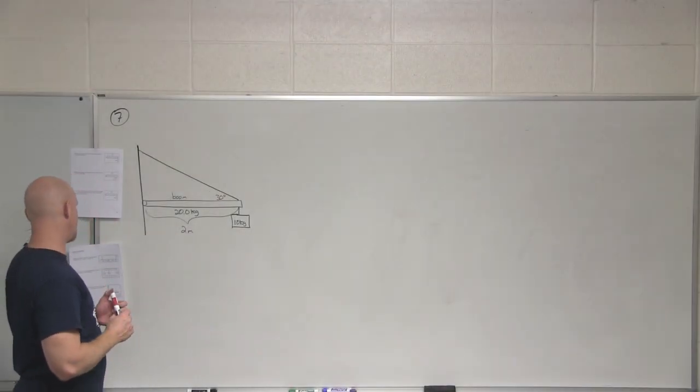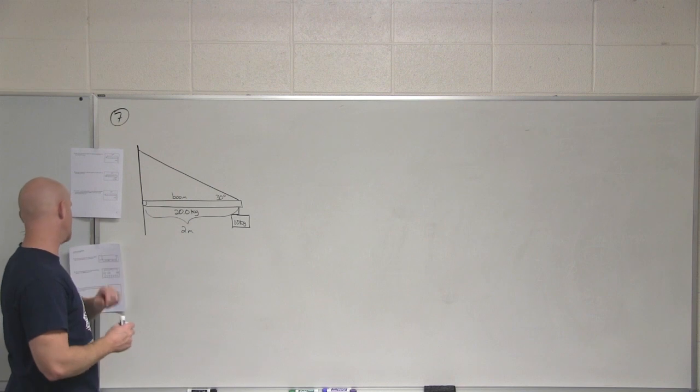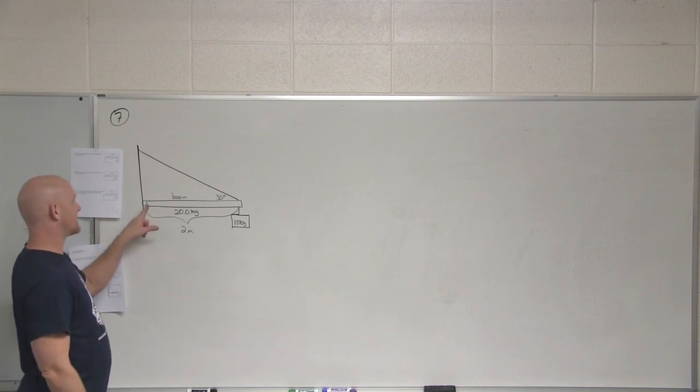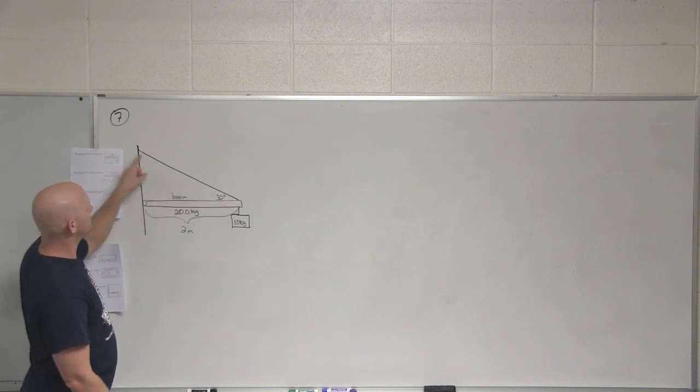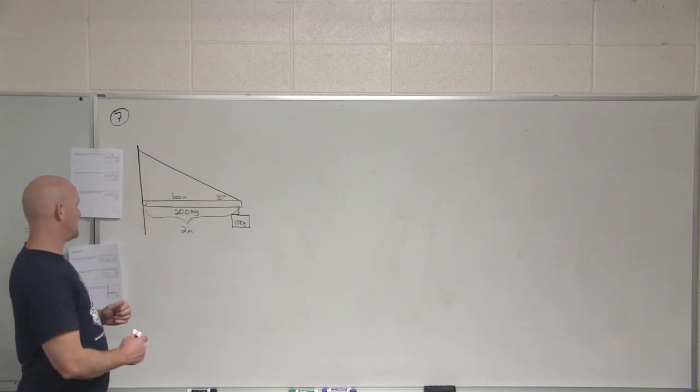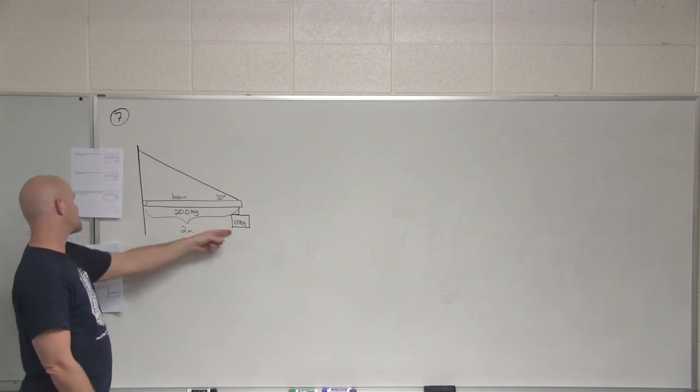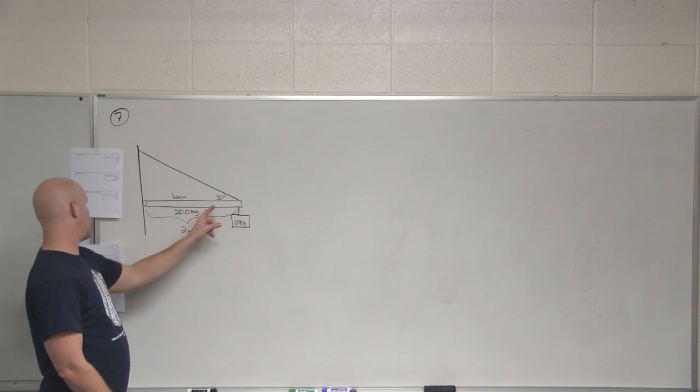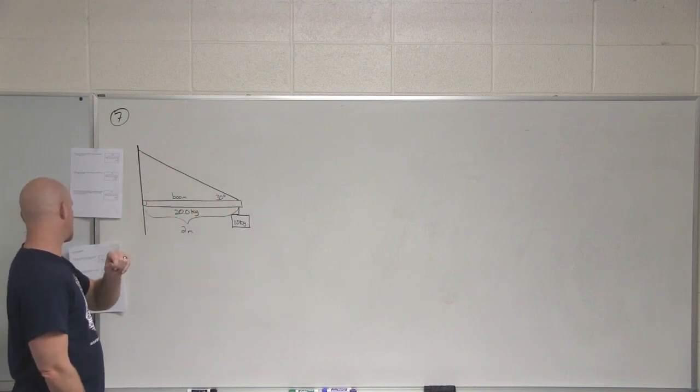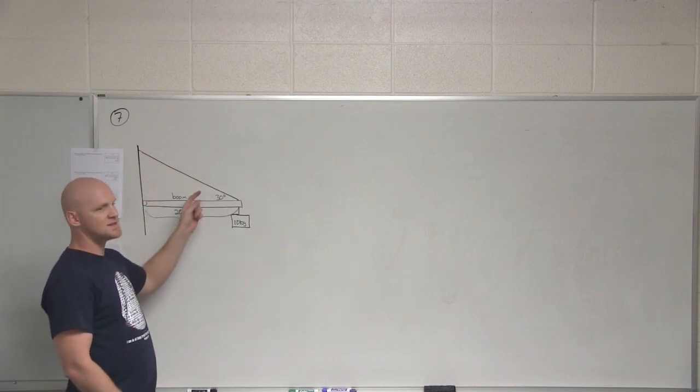Alright, question number seven says a 10 kilogram sign is hung from the end of a 20 kilogram boom. A boom is something that's typically hooked up to the hinge horizontally on a wall with a cable supporting its weight. In this case, a 10 kilogram sign is hung from a 20 kilogram boom and it's suspended by a cable attached to the wall at an angle of 30 degrees. The question is, what is the tension in this cable?